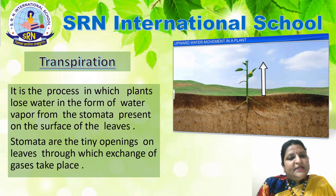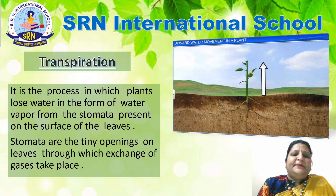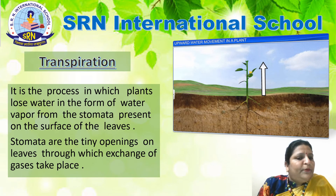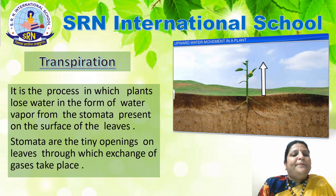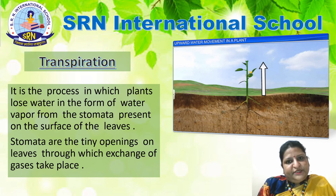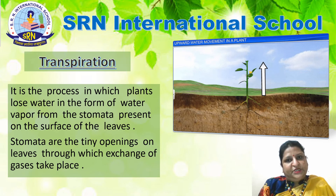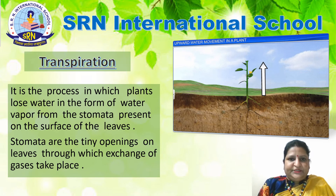Transpiration: it is the process in which the plant loses water in the form of water vapor from the stomata present on the surface of the leaves. What is stomata? Stomata are the tiny openings on leaves through which exchange of gases takes place. Importance of transpiration: it cools down the plant and protects the plant from heat injury. It also plays an important role in the water cycle.